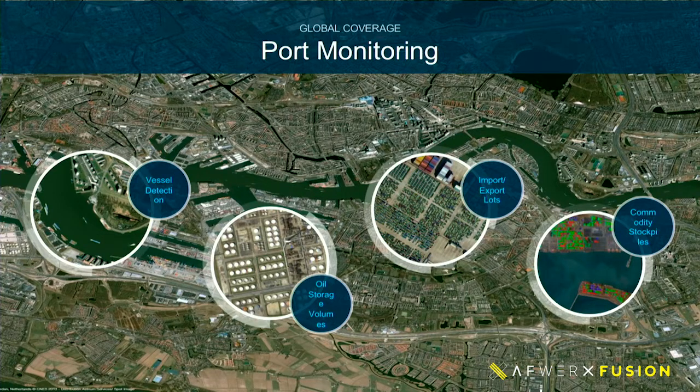Another area of great interest for both commercial and government applications is port monitoring. Ports are the new manufacturing — the new factories of the world. So much of the world's goods goes through ports. We can detect vessels and ships, detect oil storage in port areas — almost every country in the world has oil storage tanks in ports because they're all importing or exporting oil. We can look at import-export lots. There was an explosion outside of Beijing a few years ago, and by counting cars in the import-export lots just before the explosion, we calculated there was about $15 million worth of cars blown up. That's important for insurance companies as well as situational awareness, and of course commodity stockpiles like iron ore, copper ore, or oil.